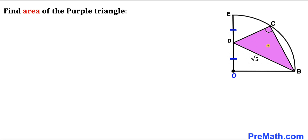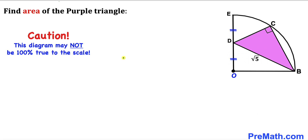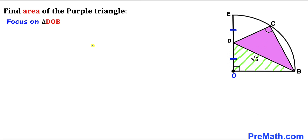Welcome to pre-math. In this video we have a purple right triangle BCD fully inscribed in a quarter circle, such that the hypotenuse BD is square root of 5 units. Moreover, segment ED equals segment OD, and OB and OE are radii of the same quarter circle. Our task is to calculate the area of this purple triangle. Note that this figure may not be 100% true to scale.